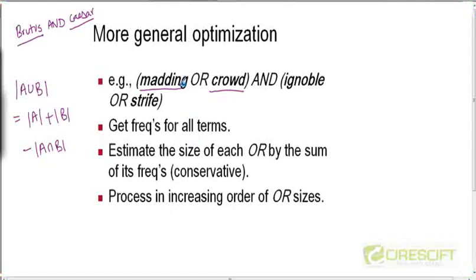So one heuristic that we could use to estimate the size of an OR term is to sum the lengths of the two lists which are being ORed. We can estimate the size of each OR by the sum of its frequency, and this is obviously a conservative estimate because in reality this intersection is going to be finite and the actual length is going to be smaller than the sum of the lengths. But because we don't know what this intersection is unless we actually calculate it, if we are just given the length of A and the length of B as given by the document frequency field, the best possible estimate that we can come up with for the OR result is the sum of the lengths of the two postings lists.